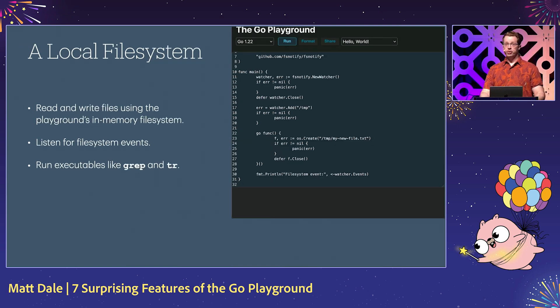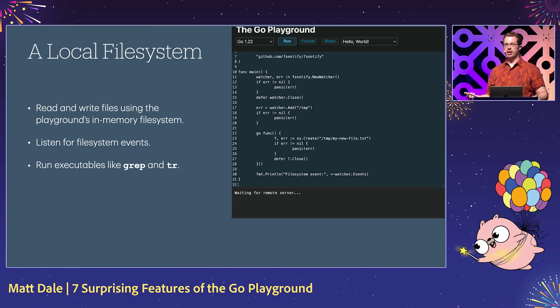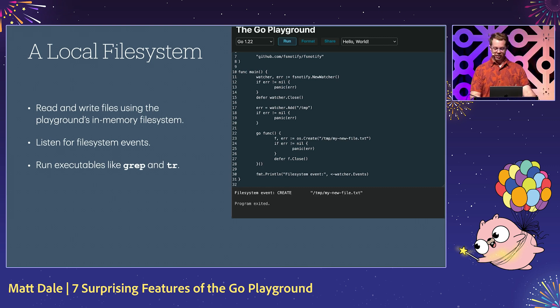You can read and write files to a file system in the Go Playground. In this example, we're using the FSNotify library to listen for file system events in the Go Playground.